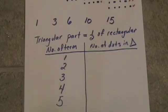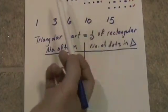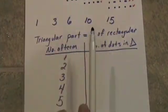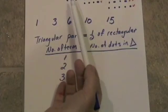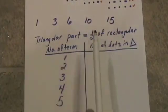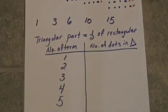Now, let's take a look at the triangular part of the rectangular array. It's always going to be half the number of marks in the rectangular array. We can use this fact to actually build a little formula for these triangular numbers.